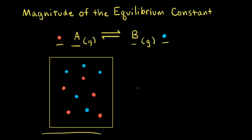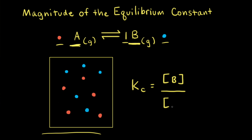Let's write the equilibrium constant expression for this hypothetical reaction. We write Kc equal to products over reactants. Our product is B, so this is the concentration of B. Since the coefficient is 1 in the balanced equation, it's the concentration of B raised to the first power, divided by the concentration of our reactant A, which also has a coefficient of 1 — so the concentration of A raised to the first power.